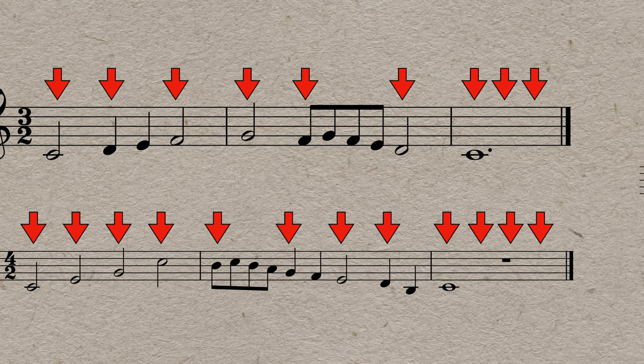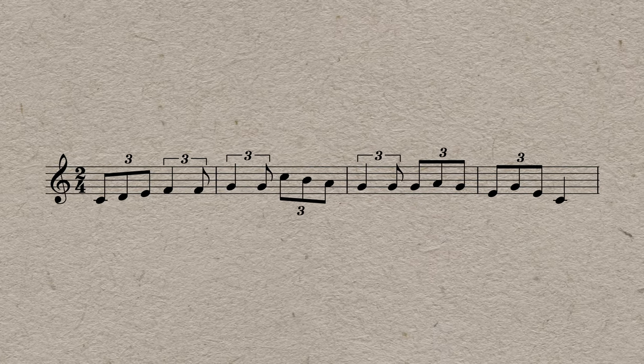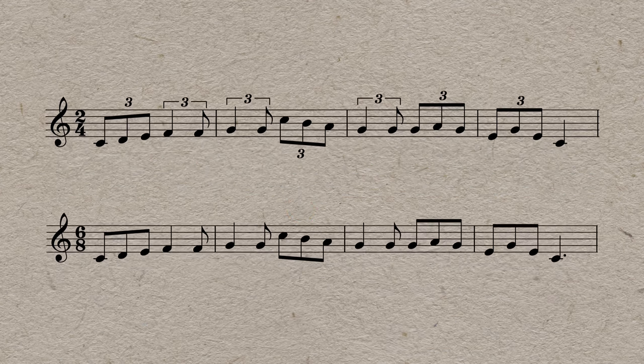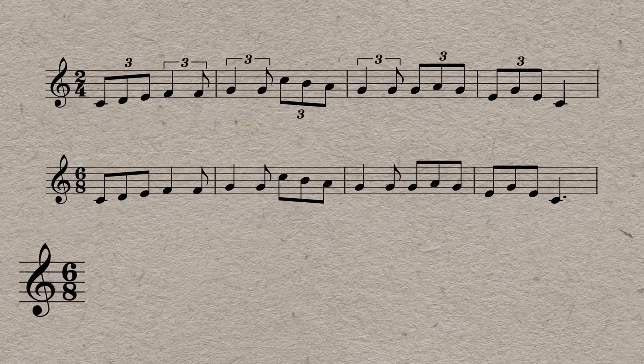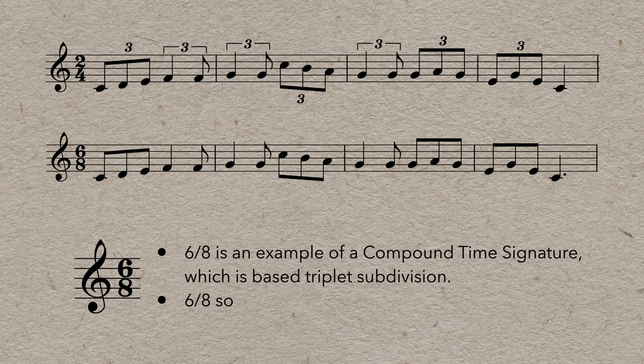Now, just like you might use cut time to avoid 16ths, if you were playing a piece with lots of triplets, you might start to wonder if there's a way to avoid having all those little 3s that are cluttering up the music. And we can actually eliminate all of those and make this a lot easier to read with a 6-8 time signature. 6-8 is an example of a compound time signature, which is based on triplet subdivision. So it sounds and feels just like 2-4 with triplets, but the main difference is it's easier to read.